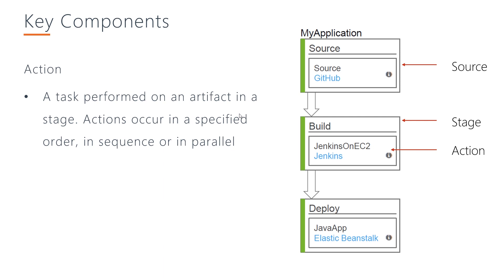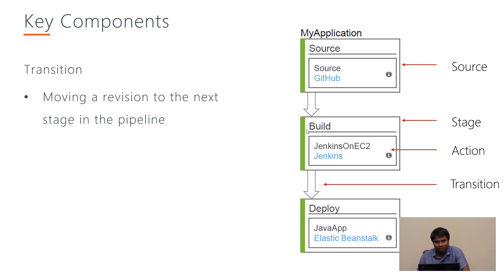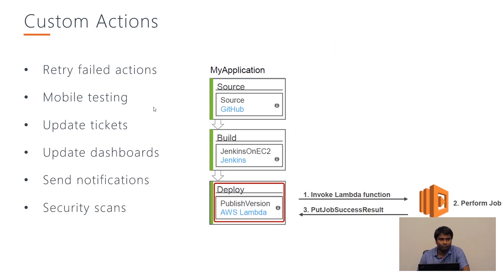An artifact is taken from the source stage and an action occurs in a specified order — it can be in sequence or in parallel. For example, a parallel action: once two actions are done, a test API run action will follow. All stages have stage transitions, and artifacts move from one stage to the next. We can even have custom actions apart from the default actions provided by AWS. Those custom actions can be used for retry on failed stages, mobile testing, updating bug tickets, or updating dashboards and notifications.